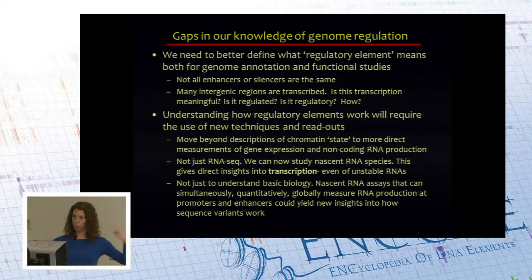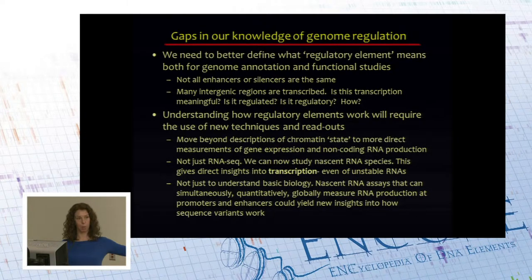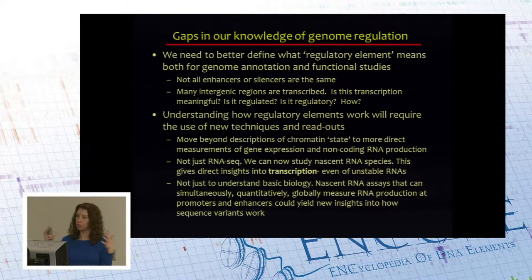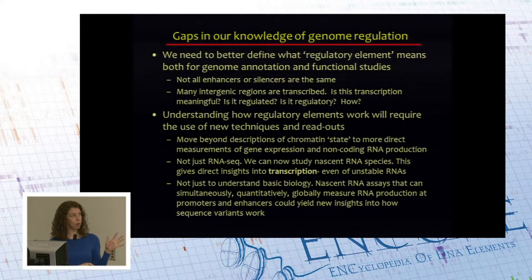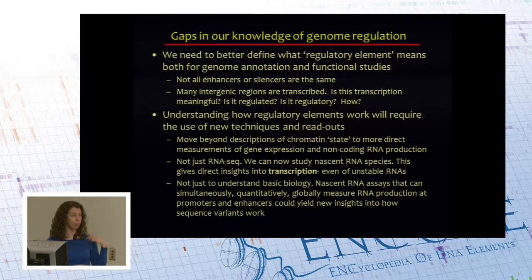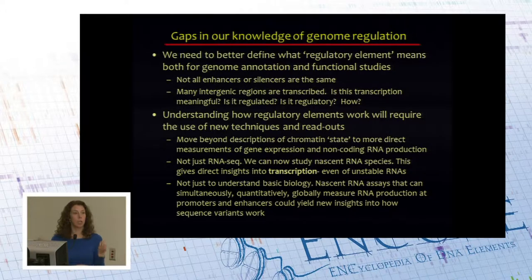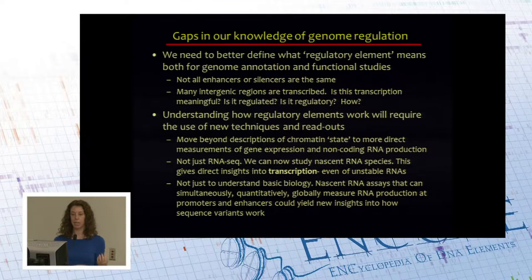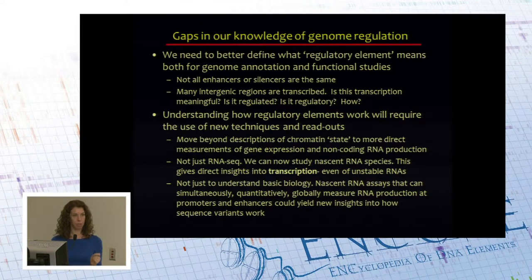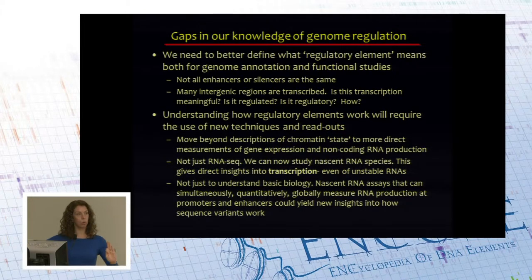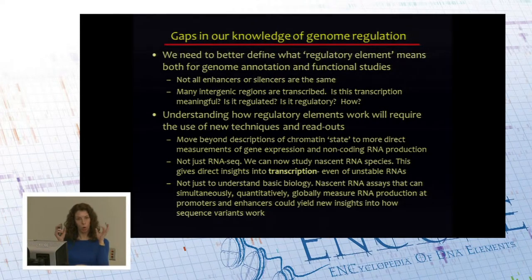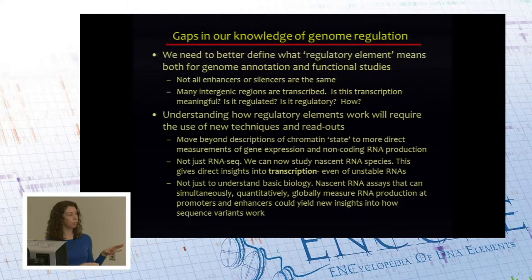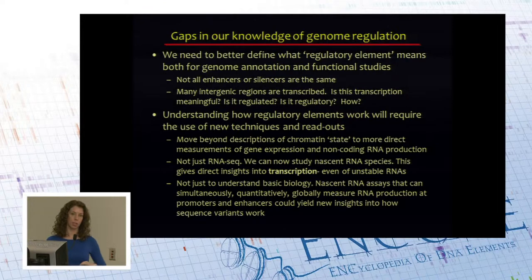We need to come at this from both angles: better assays of the proteome, and better assays of the nascent transcriptome, to understand how these two things interface. If you take human-derived IPS lines or differentiated tissue and look at nascent RNA, you can quantitatively and simultaneously measure activity from an enhancer and all local genes in that region, as well as how changing expression there affects all other genes in the genome — giving you a quantitative picture of how enhancer sequence or deletion affects both local target genes and the entire genome.